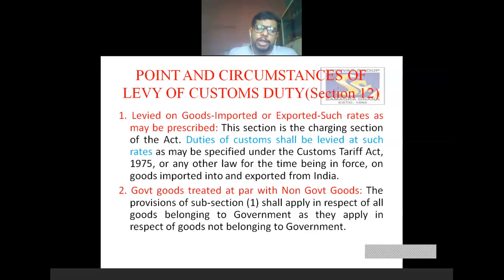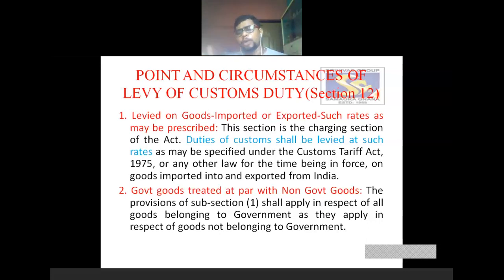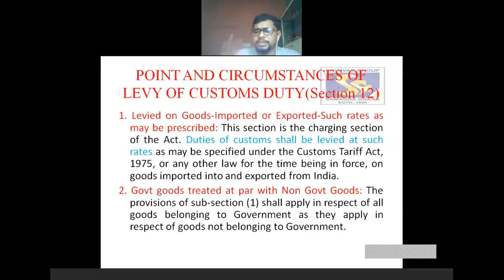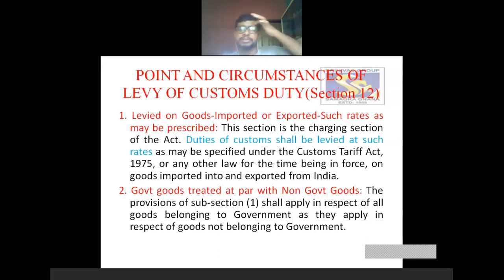Second point: government goods are treated at par with non-government goods. There is no much difference between government goods and non-government goods. Even government goods as well as non-government goods are treated equally. The provision of subsection 1 shall apply in respect of all goods belonging to the government as they apply in respect of goods not belonging to the government. The same rule applicable for goods imported by non-government is also applicable for goods imported by government. Government goods is treated at par — equally with non-government goods — under the Customs Act 1962, as mentioned under section 12 subsection 1.